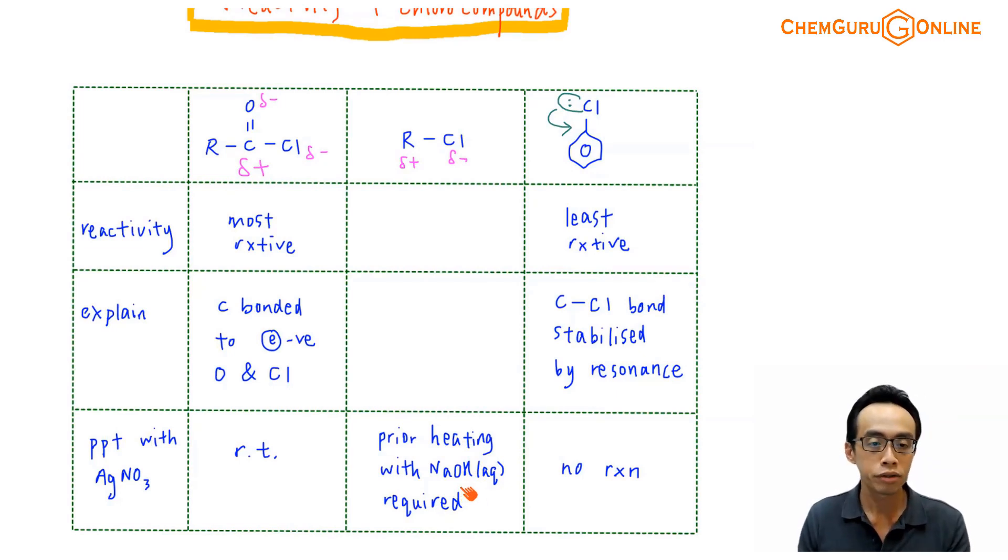It is possible for me to precipitate my Cl- if it is a chloroalkane, but I need prior heating with sodium hydroxide required. So it shows that it is less reactive as compared to acid chloride. Acid chloride, room temperature I can get an observation. Chloroalkane, I can get white precipitate, but I need to do heating, prior reaction.